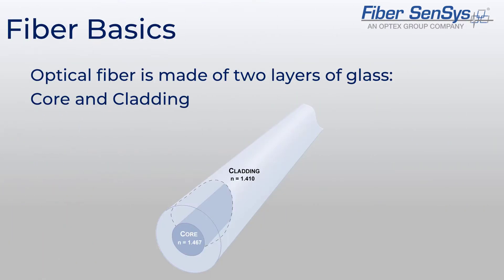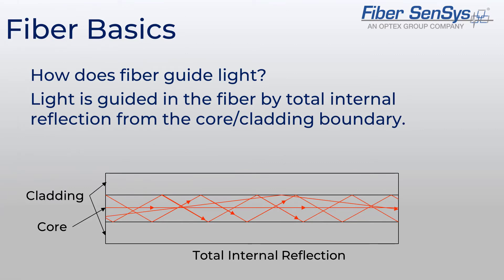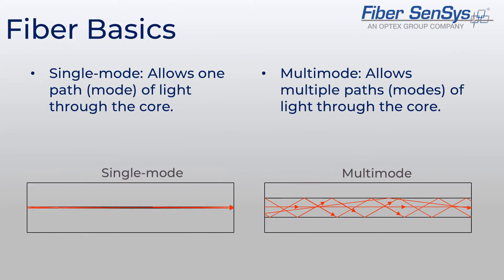Optical fiber is made of two specifically formulated layers of glass that form the core and cladding. The core and cladding each have a unique index of refraction, a material property critical to the function of the fiber. The variation of material properties between the core and cladding allows optical fiber to take advantage of two optical characteristics — reflection and refraction — causing a phenomenon called total internal reflection. This phenomenon allows light to pass exclusively through the core of the fiber, enabling signal transmission over large distances with minimal loss.